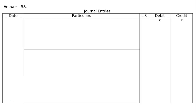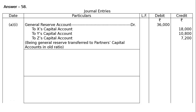Here the proper journal format will be used. Part A, first entry: General Reserve account debited Rs.36,000. To X's capital account Rs.18,000; to Y's capital account Rs.10,800; to Z's capital account Rs.7,200. Being General Reserve transferred to partners' capital accounts in old ratio.